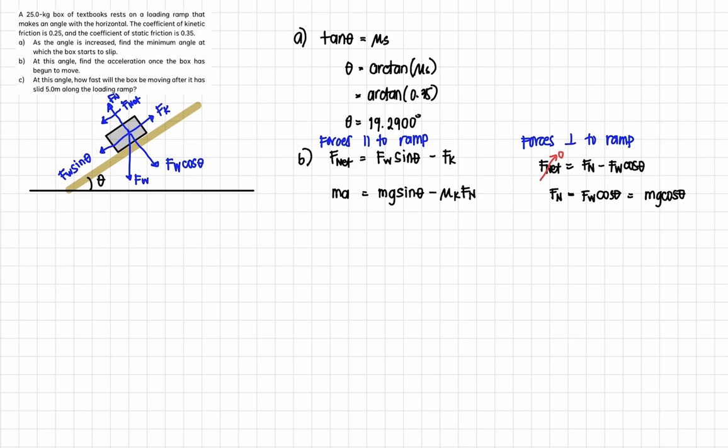So FN equals M G cosine theta. So we can just cancel M. So acceleration is equal to G sine of theta minus mu K G cosine of theta.